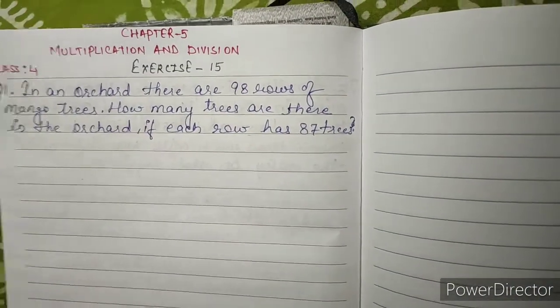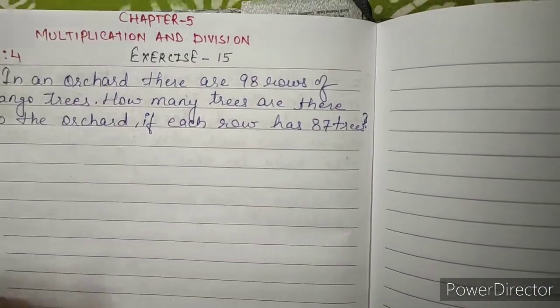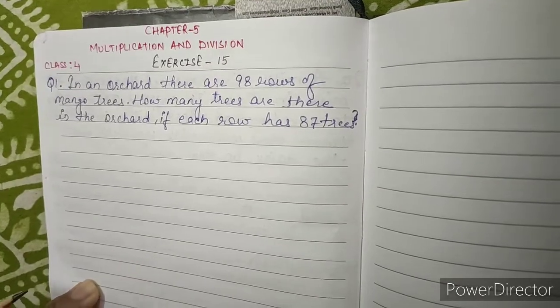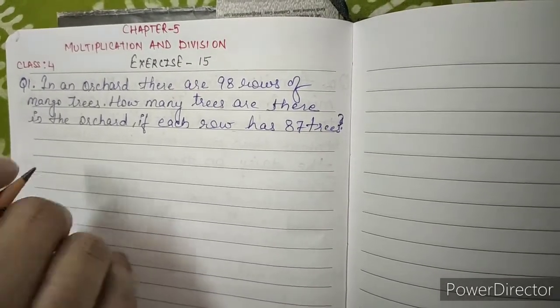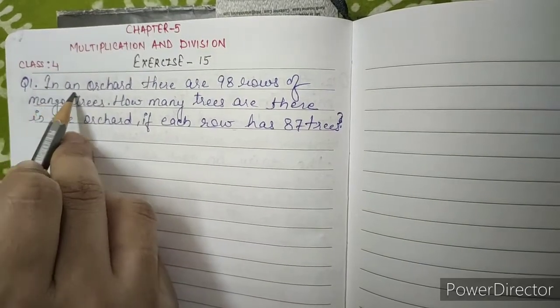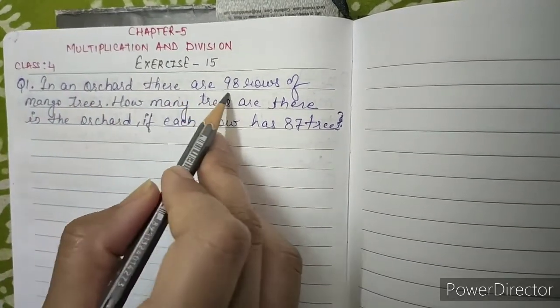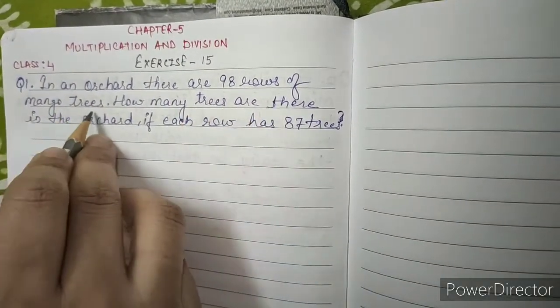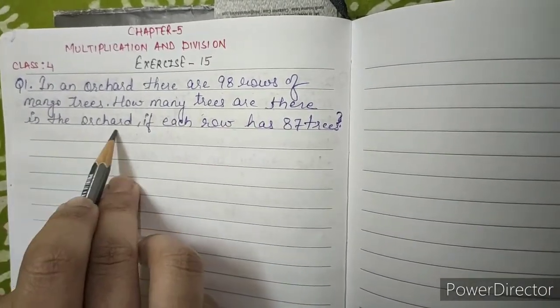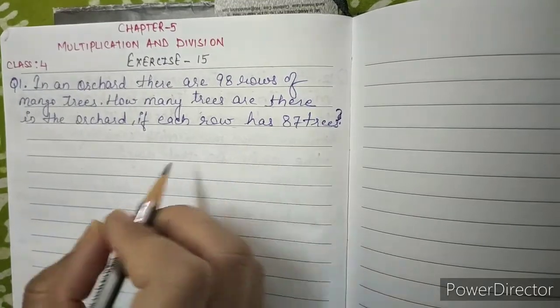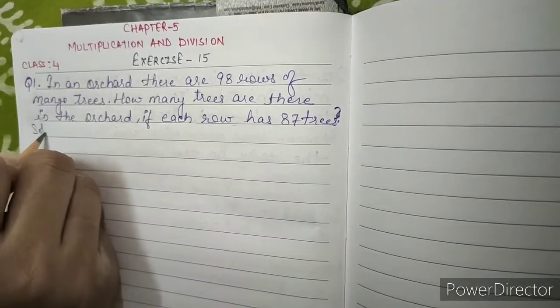Hello students, welcome back to our new video session. This video is for Class 4, Chapter 5, Multiplication and Division, Exercise 15. Question number 1: In an orchard there are 98 rows of mango trees. How many trees are there in the orchard if each row has 87 trees?